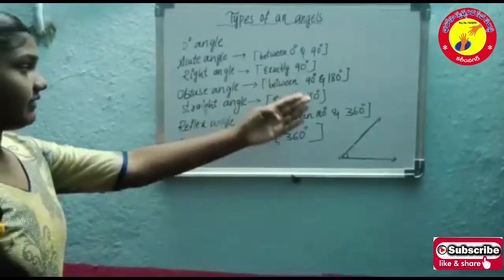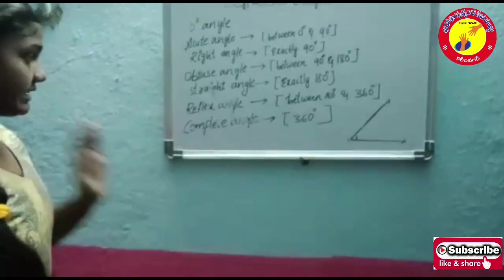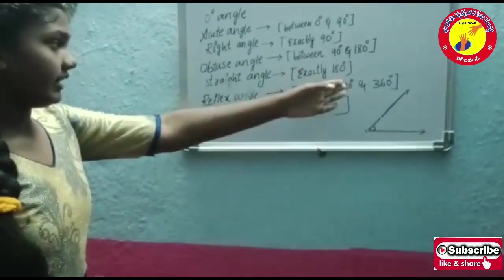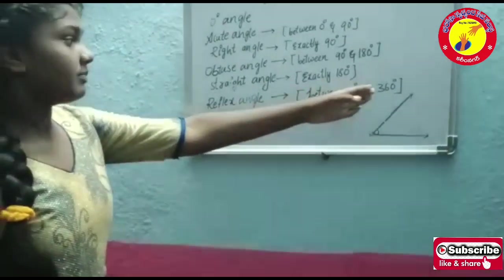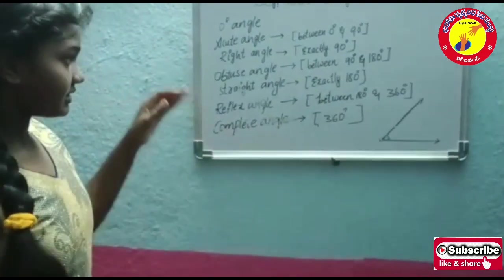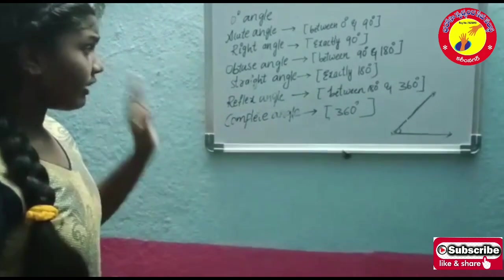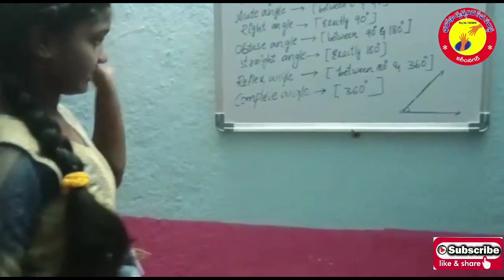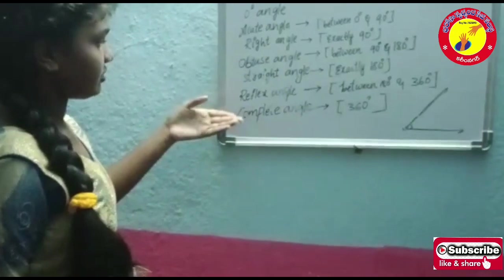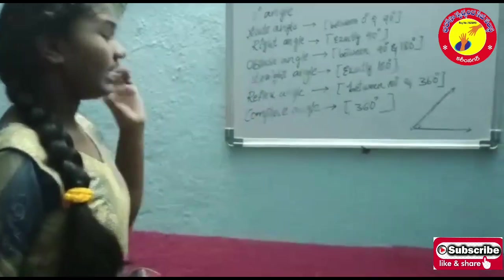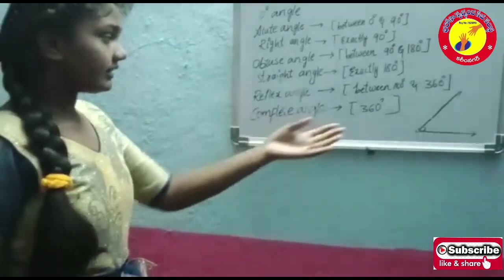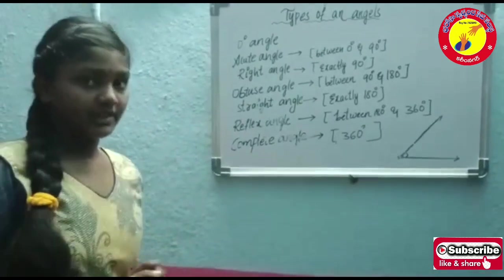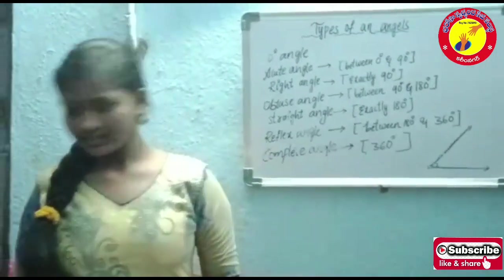The next one is the straight angle — straight angle means exactly 180 degrees. The next one is the reflex angle — reflex angle means between 180 degrees to 360 degrees. For example, 190 degrees, 240 degrees, 350 degrees. And the next one is the complete angle — complete angle means totally 360 degrees.